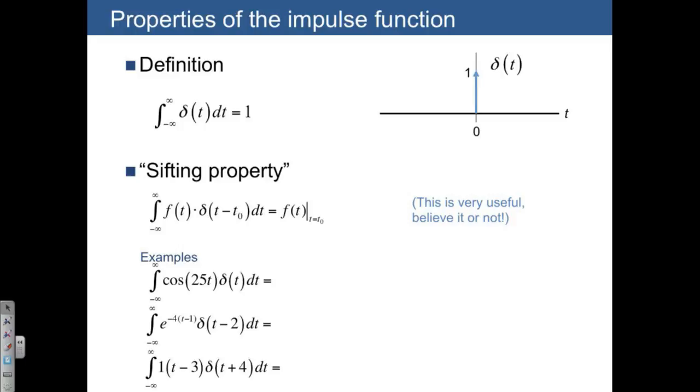So the first one, we have an f of t, which is just the cosine. And then the delta, in this case, has been shifted by an amount 0. So we just have to take cosine of 25t and evaluate it at the time t0, which in this case is equal to 0. So we end up with cosine of 0 is equal to 1.